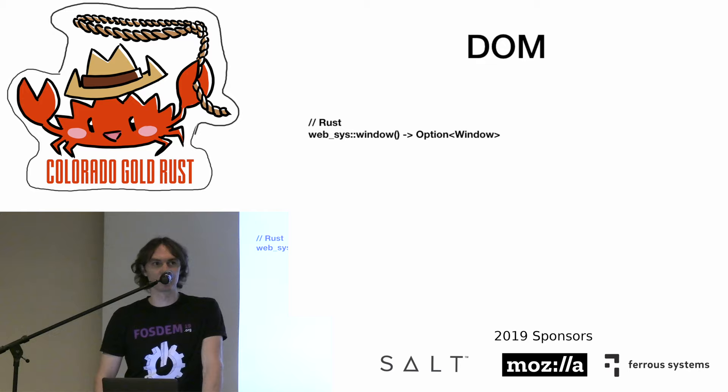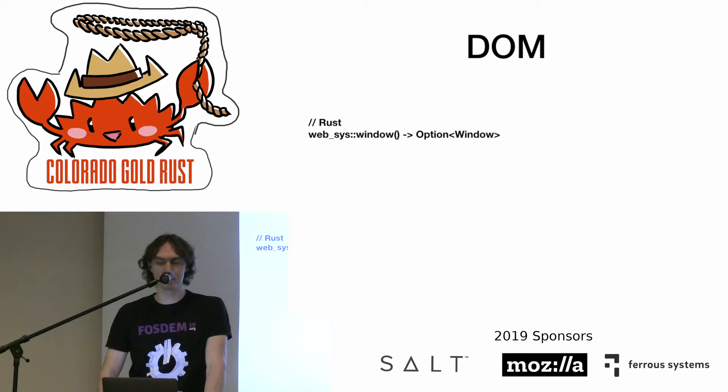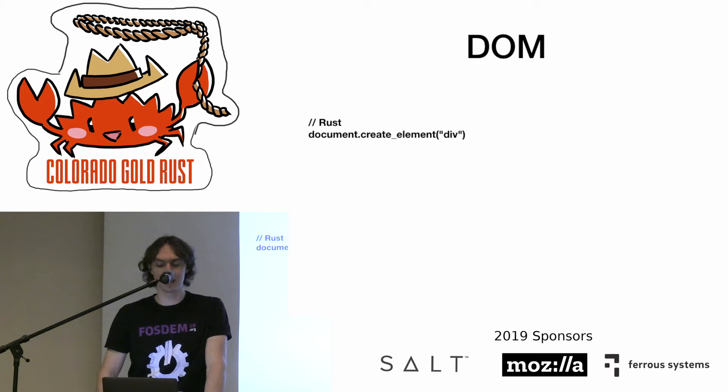Let's check a simple example. The DOM starts with the document object. At first, we need to obtain the window, and from the window we can get the document. And once we have a document, we can create our first HTML element.